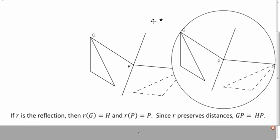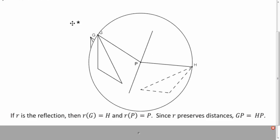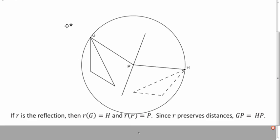Now that we could think of that is since those points are equidistant from P, you could just draw a circle around P. And that circle, if it passes through G, it must pass through H.